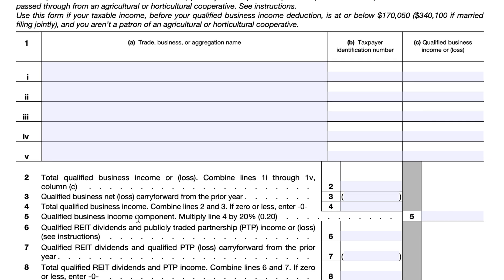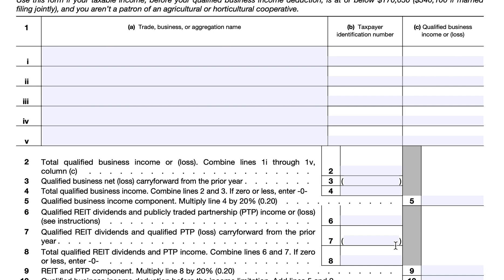In Line 5, you will multiply Line 4 by 20%. This represents the qualified business income component of your deduction. In Line 6, you will enter qualified REIT dividends and publicly traded partnership income or loss — income as a positive number and losses as a negative number. For Line 7, you will enter any carry forward of qualified REIT dividends and qualified PTP losses from the prior tax year. Include the qualified portion of a PTP loss carry forward even if the loss was from a PTP that you no longer hold an interest in or is no longer in existence.